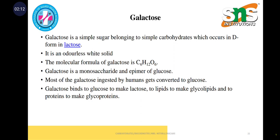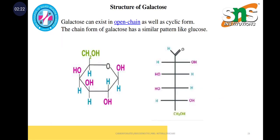Galactose binds to glucose molecules to make lactose, to lipids to make glycolipids, and to proteins to make glycoproteins. The structure of galactose exists in open chain as well as in cyclic form.